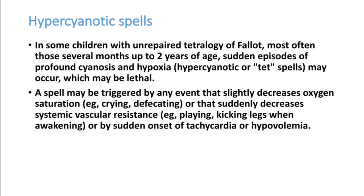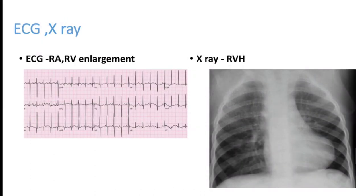Hypercyanotic spells can be triggered by decreased oxygen saturation producing dynamic obstruction in the pulmonary stenosis. During crying, defecating, or playing, the patient can have cyanotic spells. This can be relieved by sitting up or the squatting posture. On ECG, we see right atrial and right ventricular enlargement: right atrial enlargement is diagnosed by prominent, sharp P waves, while RVH is diagnosed by prominent R waves in V1. A boot-shaped heart on chest X-ray is a classical finding seen with RVH.